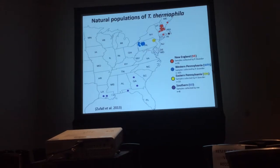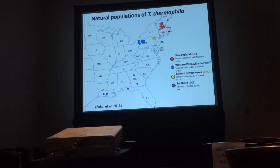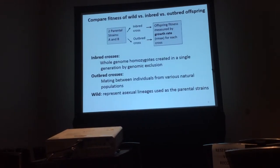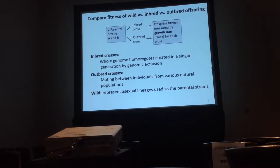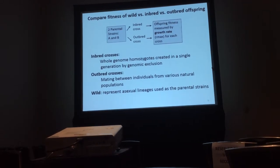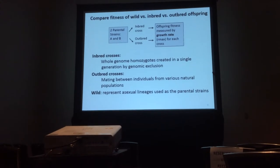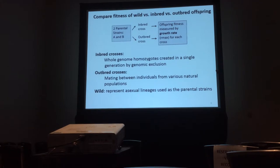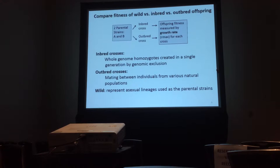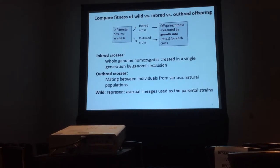Here's what I did. I worked with natural populations of Tetrahymena thermophila — this is showing where they've been collected, and the different colors represent the different natural populations. These four different populations are genetically differentiated from one another. With isolates from these natural populations, I compared the fitness of wild strains, inbred, and outbred crosses. The wild strains represent asexual lineages and are used as the parental strains for all the crossings. For inbred crosses, we can create whole-genome homozygosity in both nuclei using a technique called genomic exclusion. For outbred crosses, I mated two parental wild strains with each other and measured their fitness. For all three types of individuals, I measured fitness by the maximum growth rate, which we call r-max.